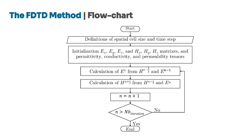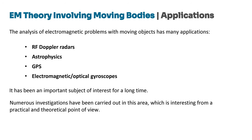This is the flowchart of the FDTD algorithm. The analysis of electromagnetic problems with moving objects has many applications: RF Doppler radars, astrophysics, GPS, electromagnetic or optical gyroscopes. It has been an important subject of interest for a long time, and numerous investigations have been carried out in this area, which is interesting from a practical and theoretical point of view.